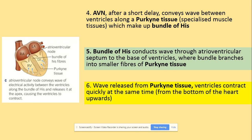Instead, the wave enters the AVN — the atrioventricular node — which delays the impulse. This delay is important because once the atria contract, blood has to be pumped into the ventricle before the ventricles contract. The wave then passes down the bundle of His through the septum. The wave is released from the Purkinje tissues and the ventricles contract — from the base of the heart upward, both ventricles contracting at the same time.